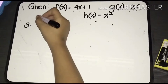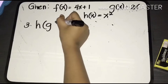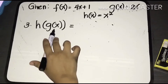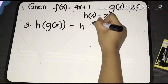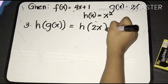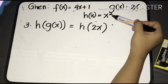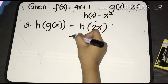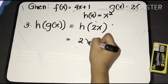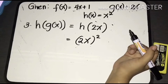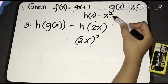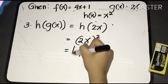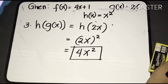For the third example, we are asked to find h of g of x. Look at the function inside the parentheses and substitute it. Copy h, then the value of g of x, which is 2x. Now look at the function h — it has the variable x, and we substitute 2x into that variable. We'll have (2x) quantity squared. Distributing the exponent 2, we'll have 4x squared. That is the final answer for h of g of x.